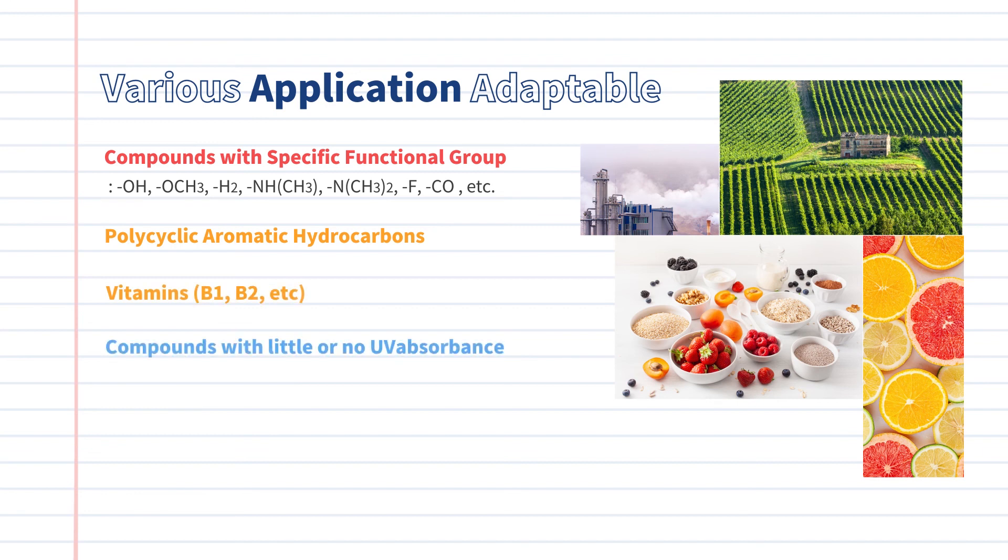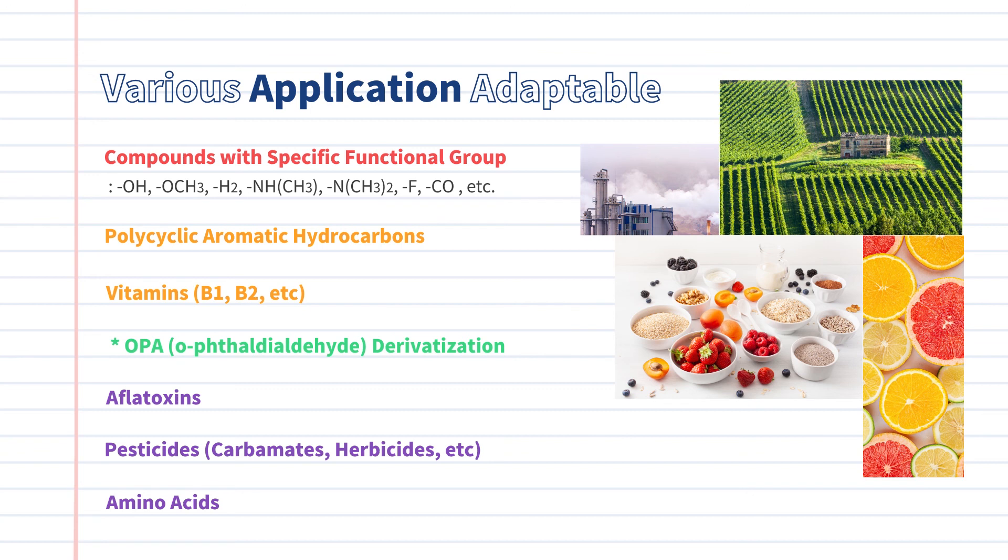If compounds have little or no UV absorbance but need to be detected in trace level, such as aflatoxins, pesticides like carbamates and herbicides, or amino acids, the derivatization of analytes with OPA reaction is required, and this ensures reproducible results with superior sensitivity.